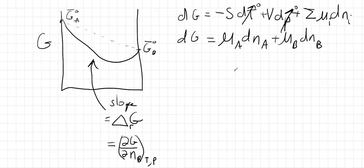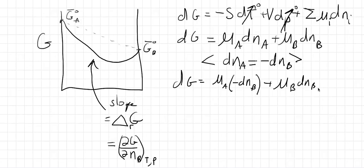And we can make a substitution here because we can see in this reaction every time we make a mole of B, we're destroying a mole of A. So we can say the change in moles of A is equal in size, opposite in sign to the change in moles of B. So let's go ahead and put that in. So we have DG is equal to mu A times minus DnB plus mu B change in moles of B.